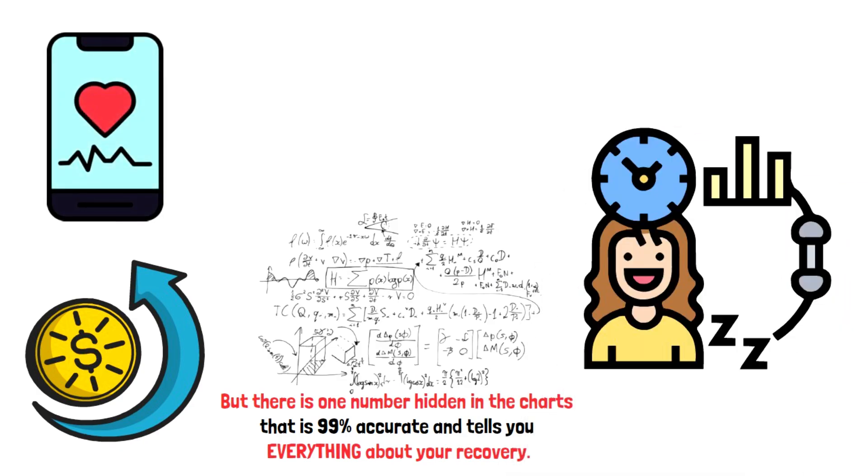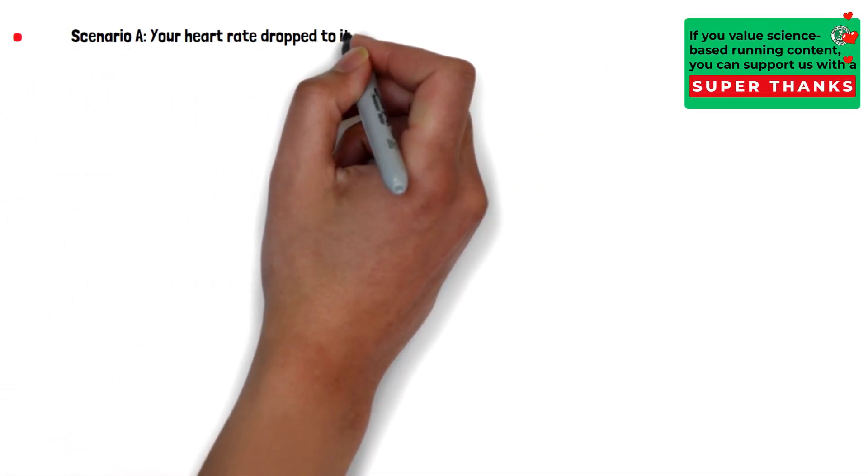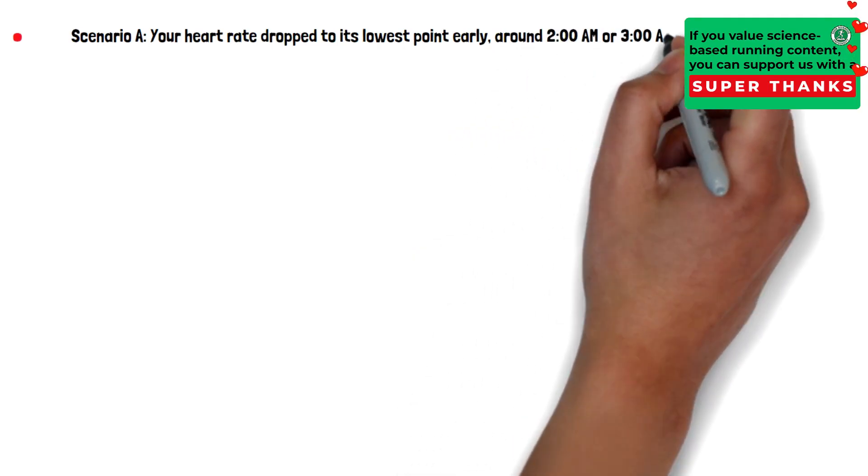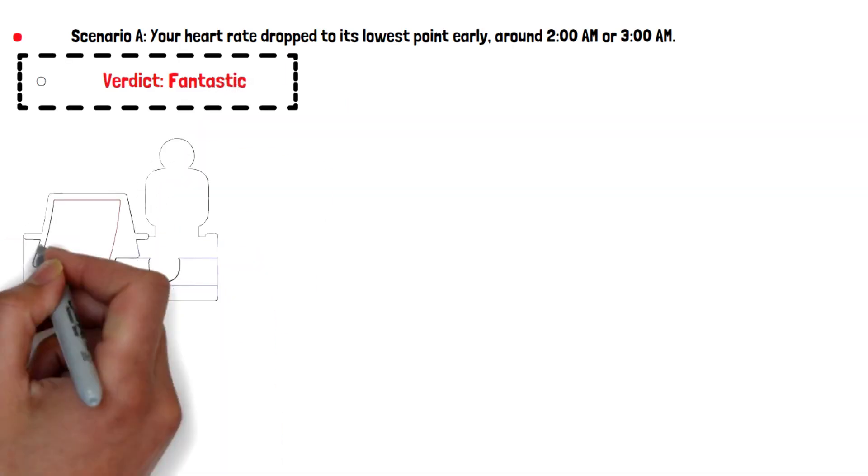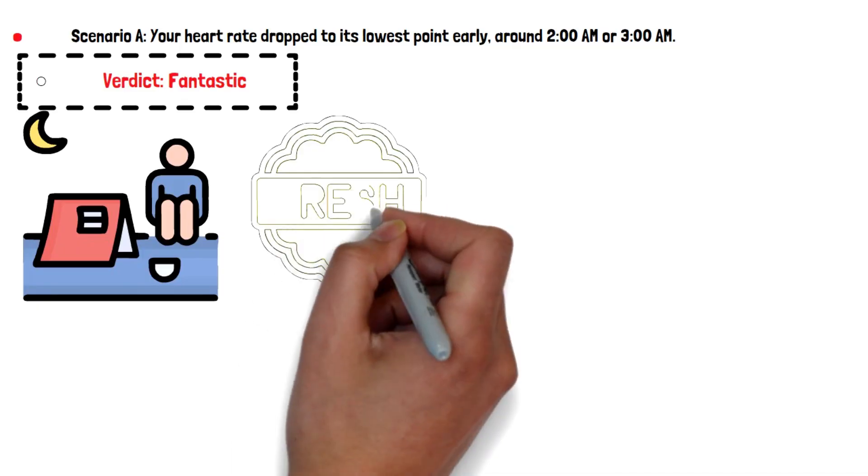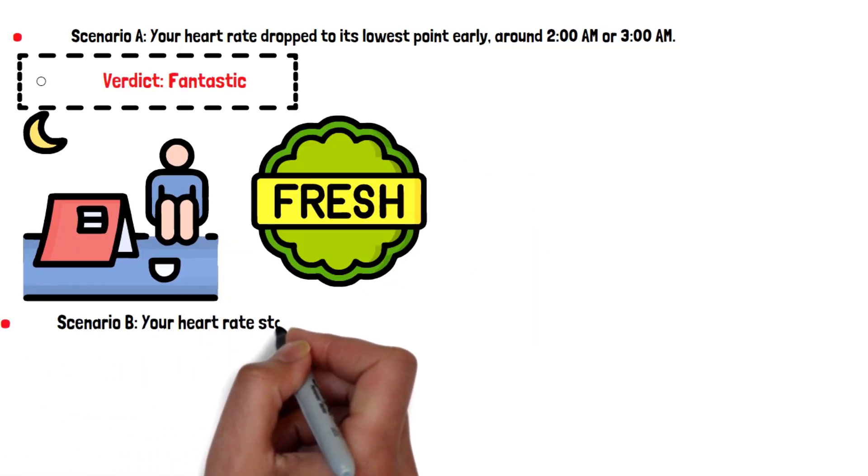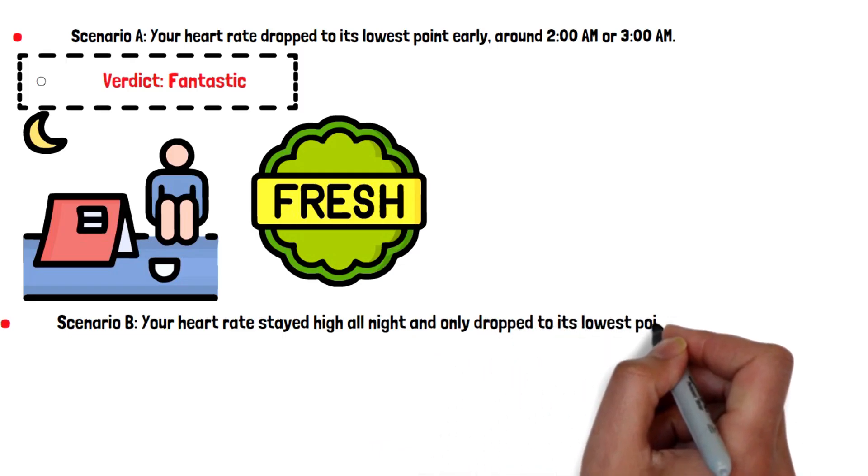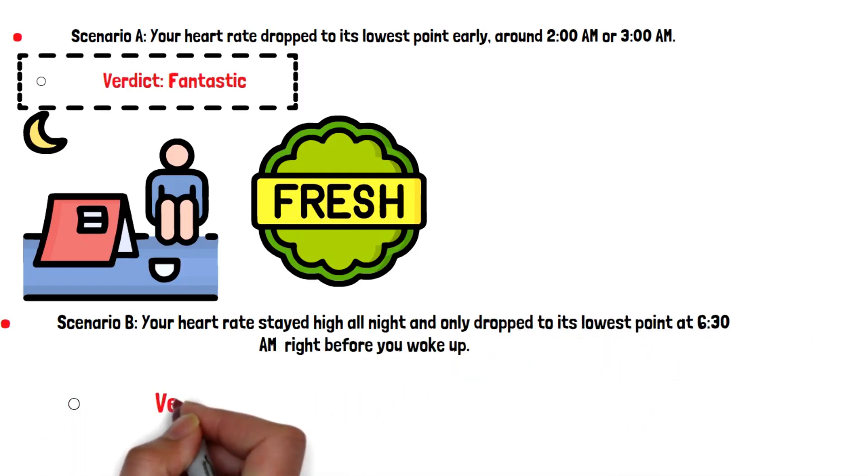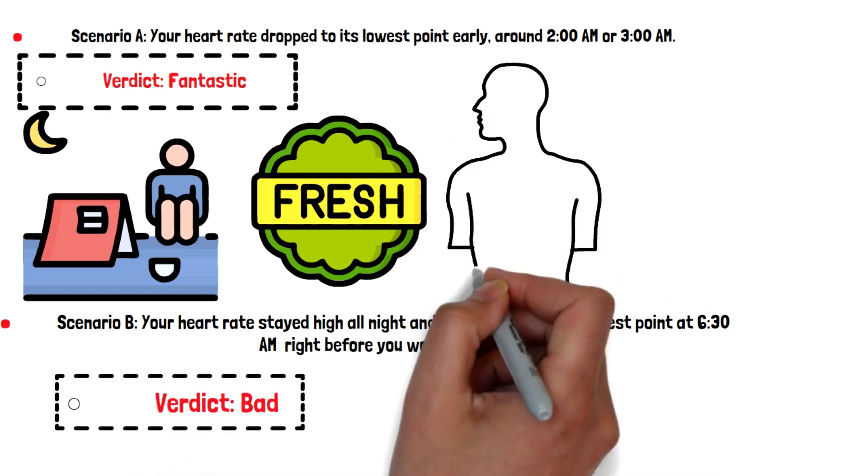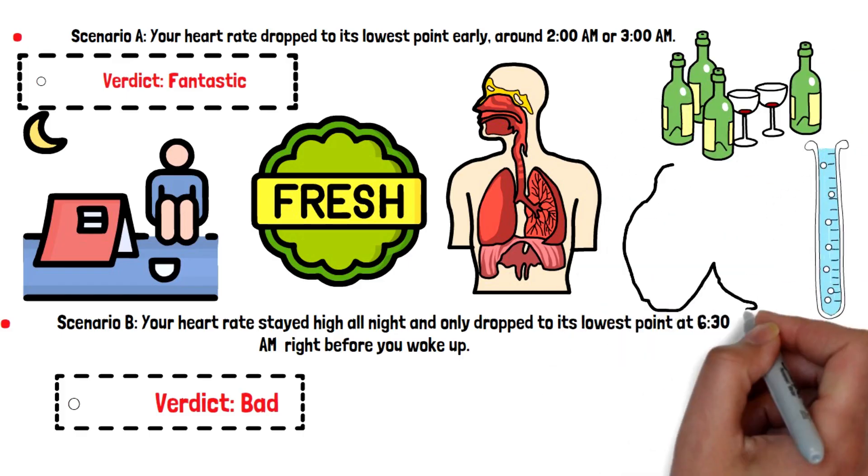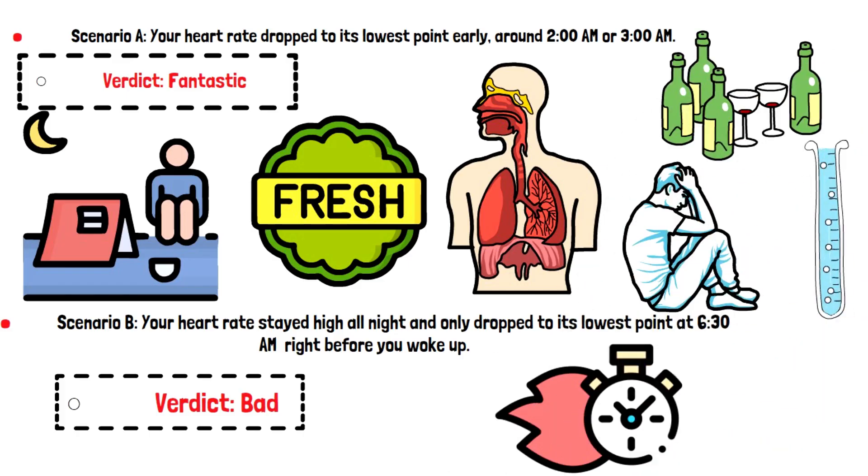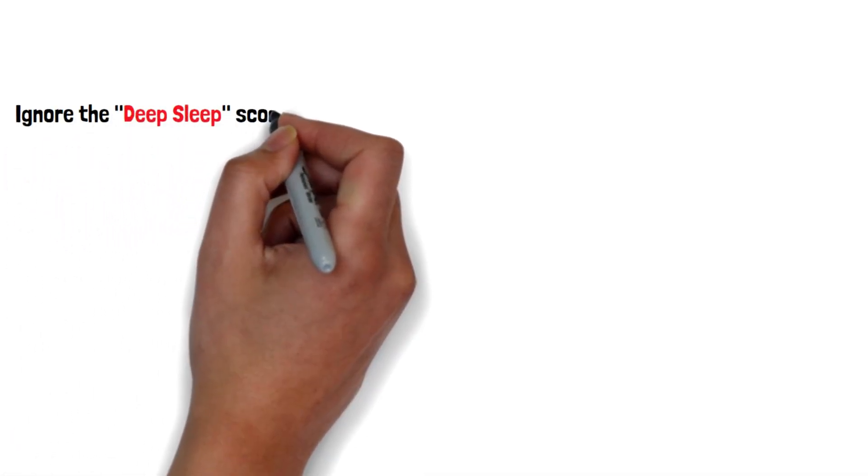Go into your sleep graph, find the lowest point of your heart rate. Scenario A: your heart rate dropped to its lowest point early, around 2 a.m. or 3 a.m. Verdict: fantastic. Your body recovered early and spent the rest of the night cruising. You are fresh. Scenario B: your heart rate stayed high all night and only dropped to its lowest point at 6:30 a.m., right before you woke up. Verdict: bad. Your body was fighting all night to recover—maybe alcohol, maybe heat, maybe stress. You ran out of time.